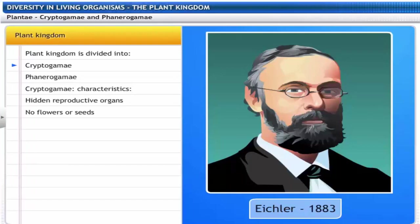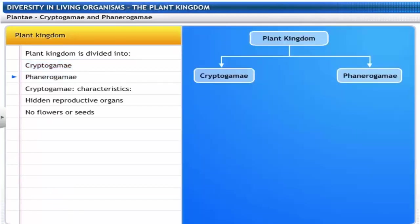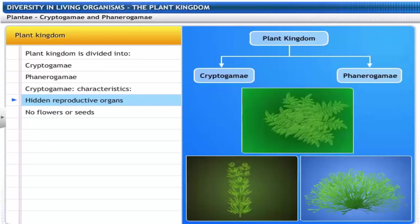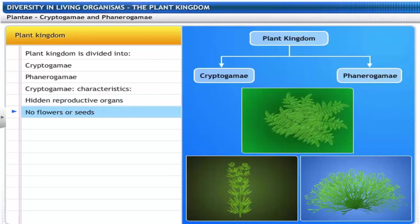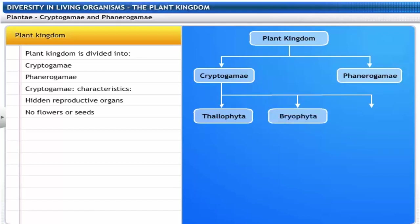In 1883, Eichler classified the plant kingdom into two sub-kingdoms: Cryptogamae and Phanerogamae. Cryptogamae includes plants with hidden reproductive organs — these plants do not bear flowers or seeds. Cryptogamae are further divided into three groups: Thallophyta, Bryophyta and Pteridophyta.